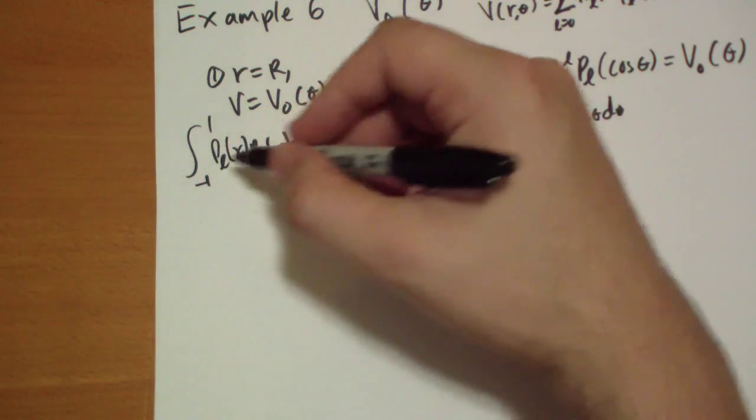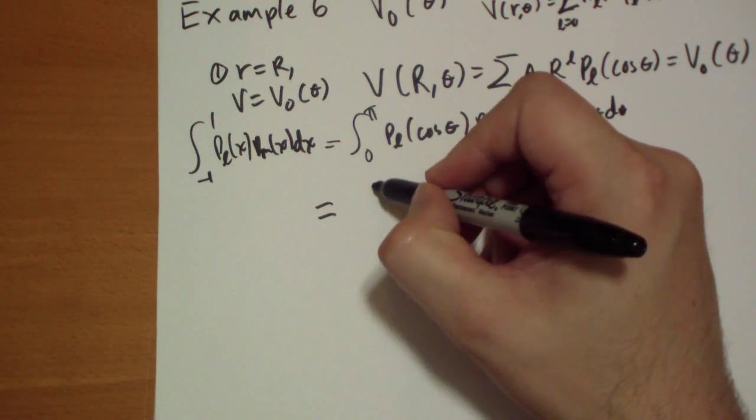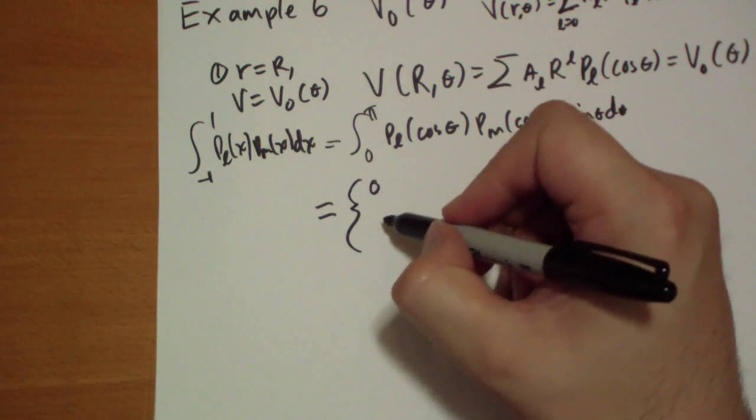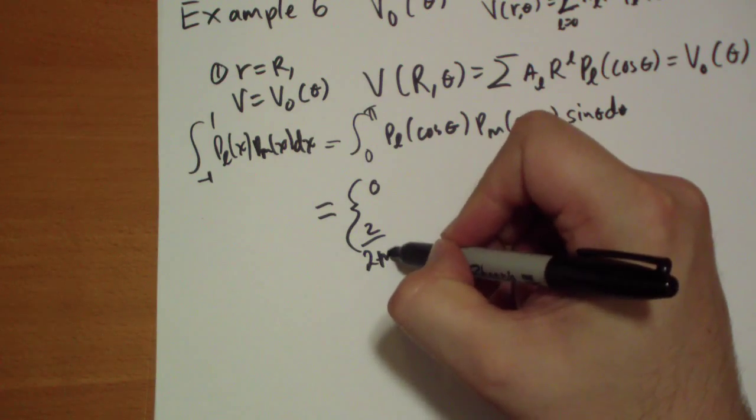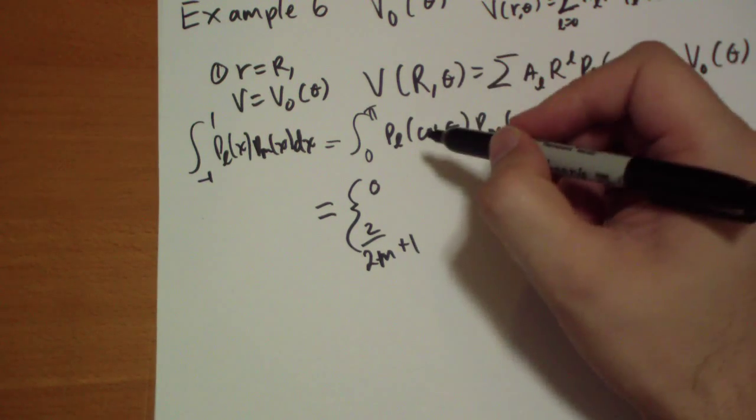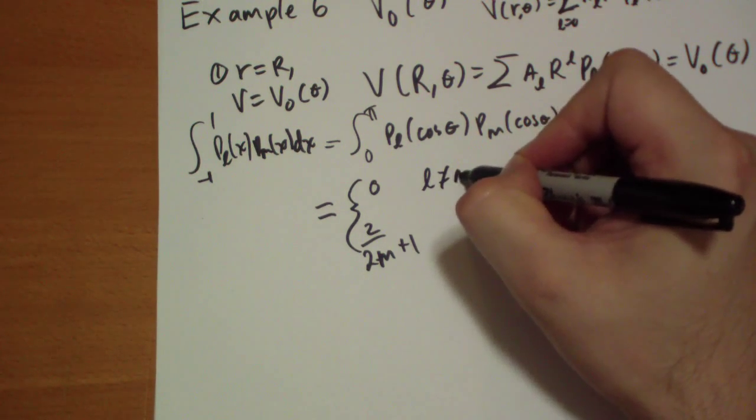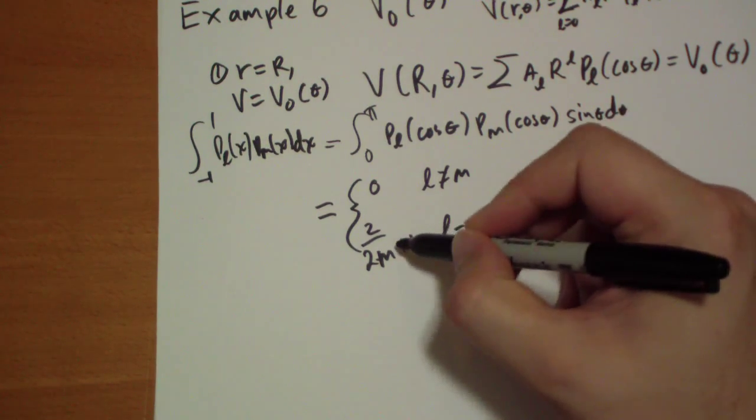And this integral is going to be equal to 0 or 2 over 2m plus 1. If l is not equal to m it's 0, and if l is equal to m it's going to be equal to that.